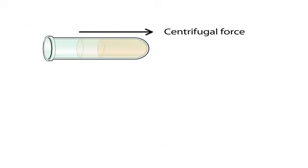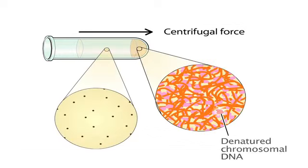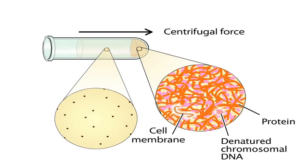Again, the material with the greatest size and density moves the fastest to the bottom of the tube. Denatured chromosomal DNA, membranes and protein sediment under these conditions. But the soluble component, such as the plasmid, do not.